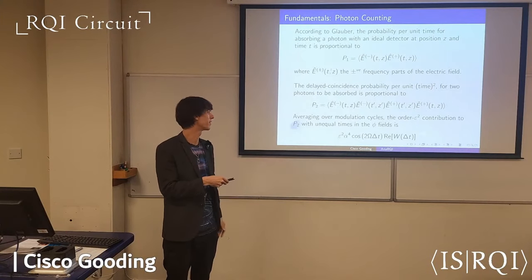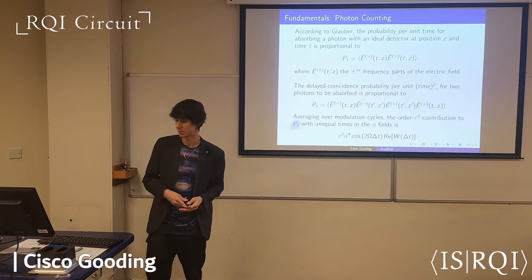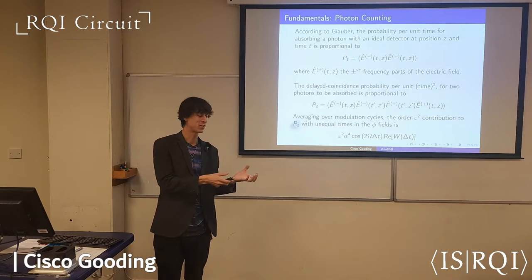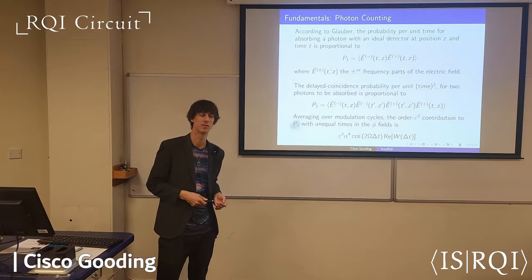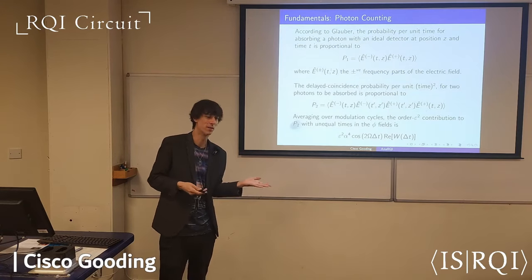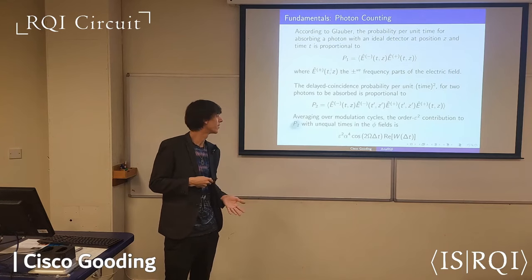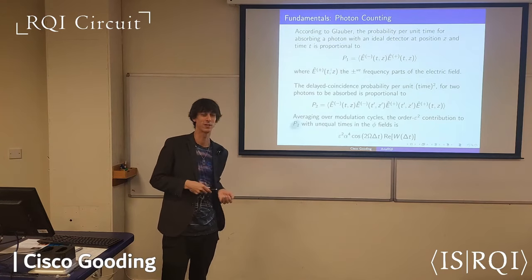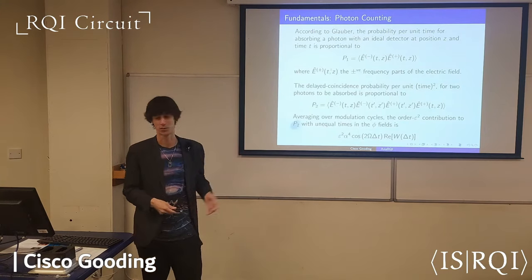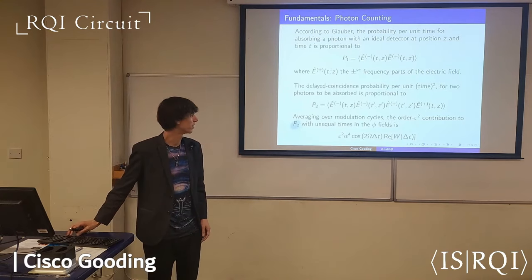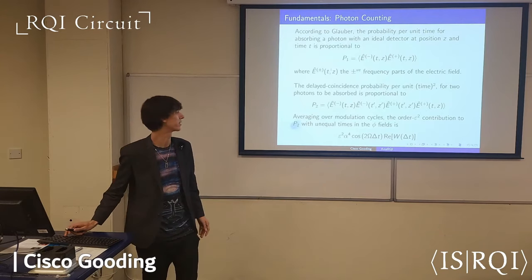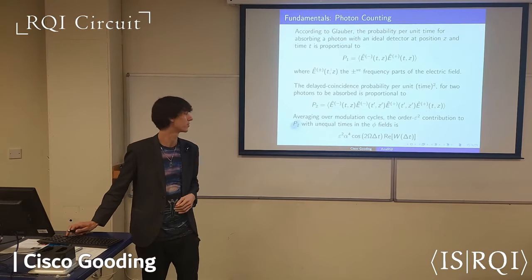Unfortunately, the straightforward calculation shows that to leading order you get exactly the wrong thing. You want the piece called the Wightman function — specifically the imaginary part in 2+1 dimensions, as previous talks may have indicated. But the first leading-order unequal time correlation gives you just the real part. This is a problem that has to be solved by either post-processing, spatial interferometry, or other techniques.